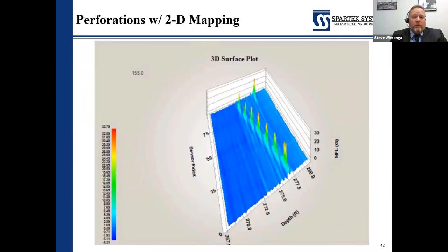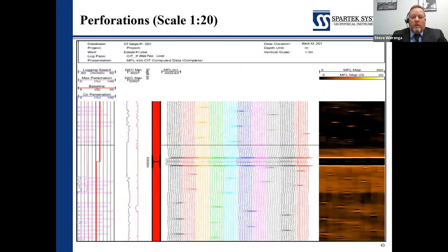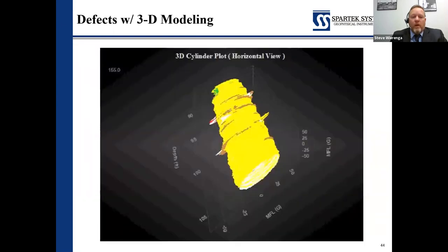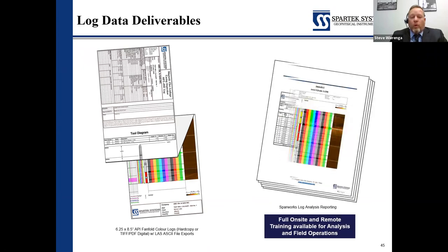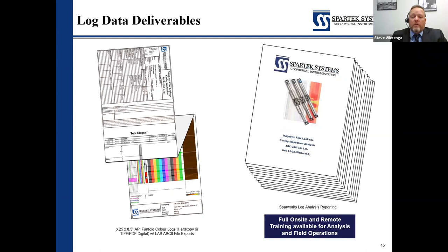Here are some examples of the 3D mapping we can see — a 3D surface plot alongside a standard log plot. You can see the resolution and how tight we can get around the collars. We can also do the cylinder plot using 3D modeling to look at any of those defects. Final products include data sets — logs are deliverable — and full reporting. The software has petrophysicists on staff who will train you on it, and they're available for support either in person or remotely. Thanks to COVID, we've gotten very good at remote training and support.